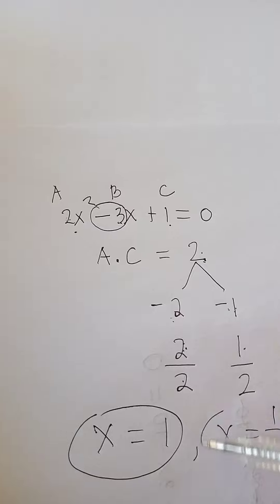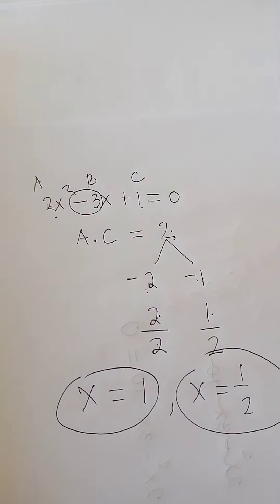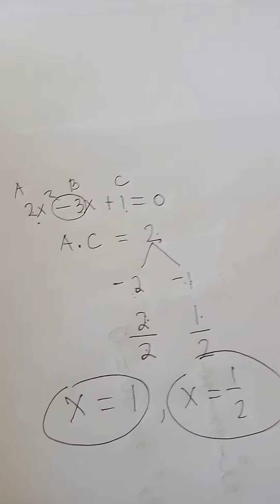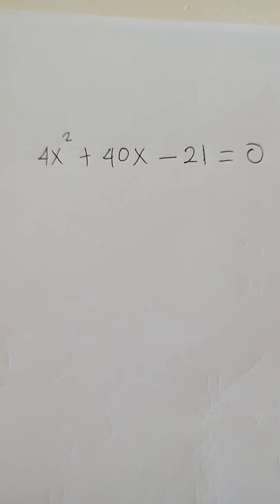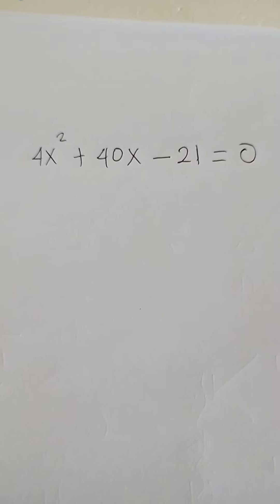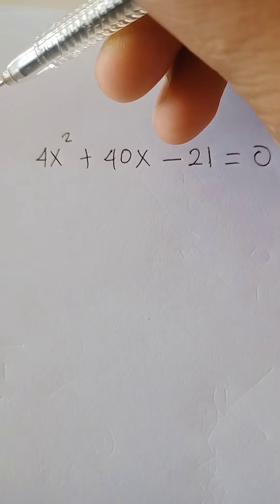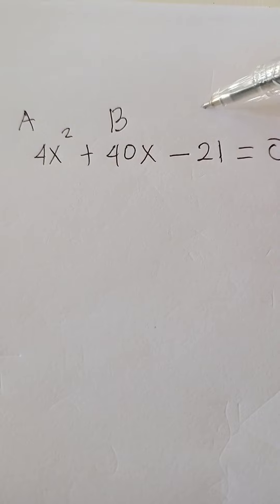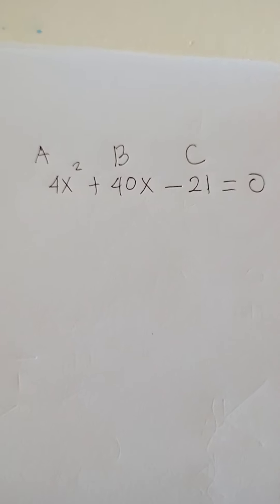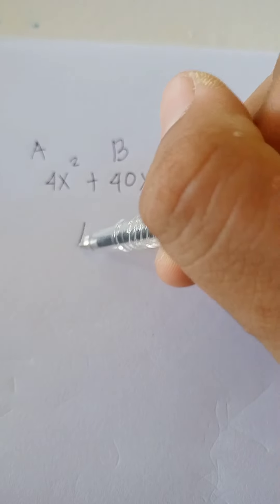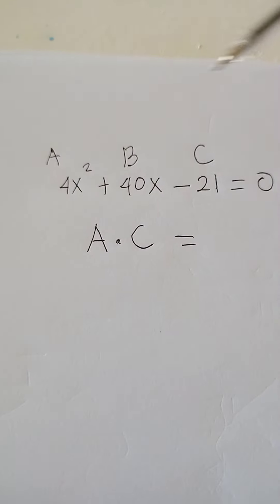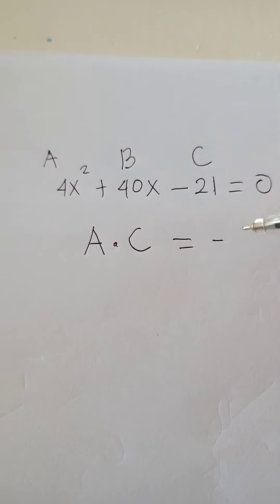So these are the values of x or the roots of our quadratic equation 2x squared minus 3x plus 1 equals 0. Now we are going to solve another quadratic equation: 4x squared plus 40x minus 21 equals 0, where A equals 4, B equals positive 40, and C equals negative 21. Again, multiply the value of A with the value of C: 4 times negative 21 equals negative 84.